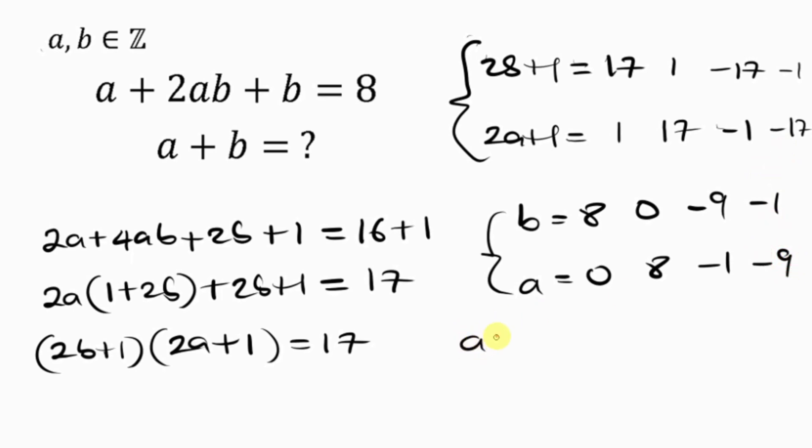Remember, the question asks us to find A plus B. So, A plus B here, when I add these two, I get 8. And when I add these two, I get negative 10. You notice I didn't add this up because I'm going to be having the same results. So, the values for A plus B are 8 and negative 10.